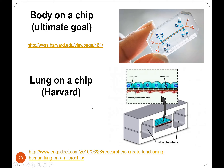Kate already talked about lung on a chip — you can make it breathe. They've looked at exposing it to bacteria, and it acted just as they expected lung tissues to react. You're starting to get different tissue layers so tissues can interact.